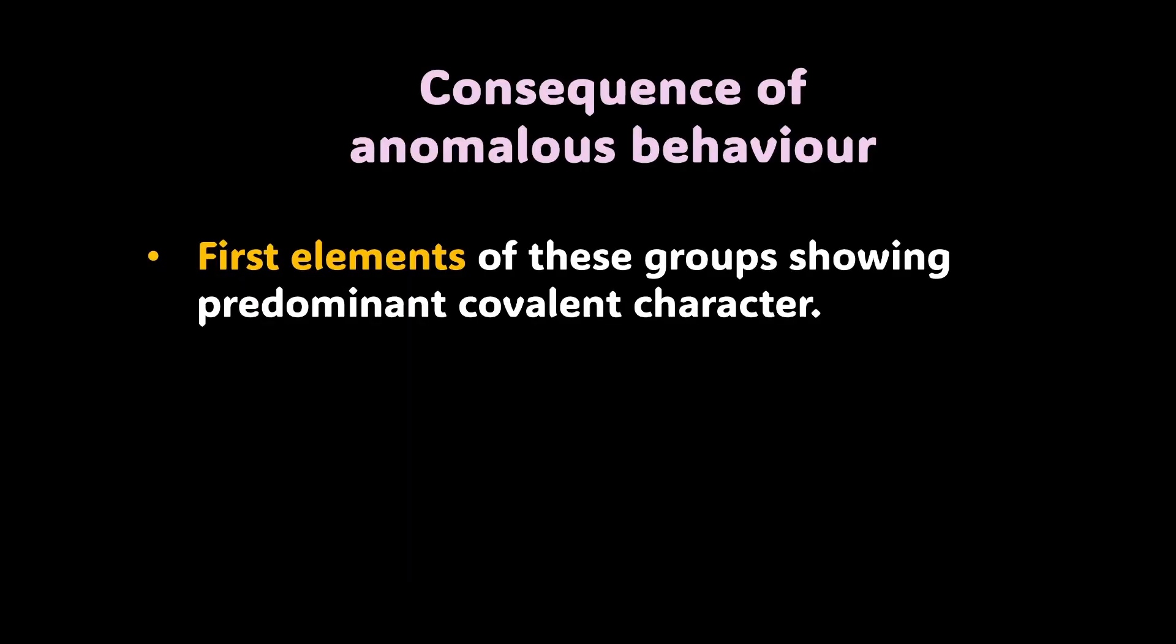Alright, now that you have understood what causes anomalous behaviour, it is time to understand the consequence of this anomalous behaviour. Well, the first elements of these groups shows predominantly covalent character. For example, if I talk about lithium chloride or beryllium chloride, what do you see? These are predominantly covalent compounds as opposed to the others in the group which majorly form ionic compounds.